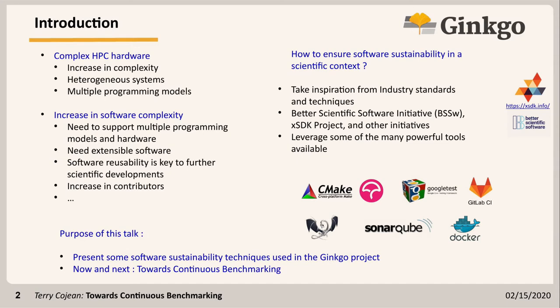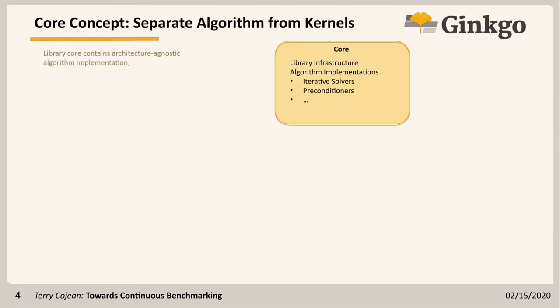We'll be presenting some software sustainability techniques we used in the Ginkgo project, because from the very beginning we saw that was a key point for our library and really focused on it. We'll also talk about what we're doing to move towards continuous benchmarking. Ginkgo is a sparse linear algebra library.